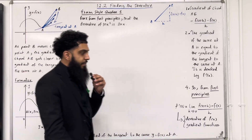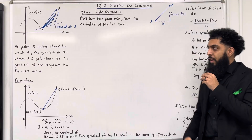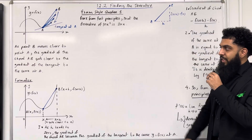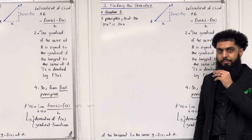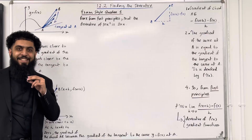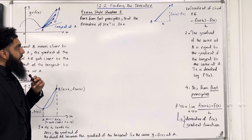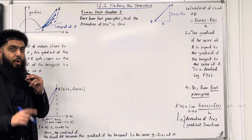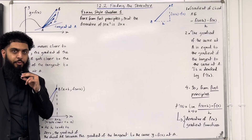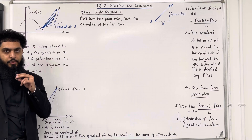Now f dash of x is called the derivative of f of x. You can also call it the gradient function. These are the key facts of 12.2 finding the derivative. I'll be implementing these key facts within two exam style questions. Let's have a look at exam style question one: prove from first principles that the derivative of 10x squared is 20x. The key word is first principles, so we have to differentiate from first principles.